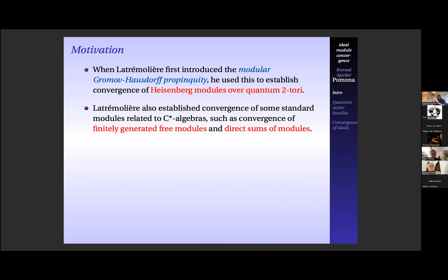When Latrémolière first introduced the modular propinquity, he used it to establish convergence of Heisenberg modules over the quantum torus. In that same paper, he also established convergence of some standard modules related to C*-algebras — finitely generated free modules and direct sums of modules. He showed that if you have convergence of the base C*-algebra, then any finitely generated modules under certain conditions converge as well in the modular propinquity. Also, if you have two modules and take the direct sum, and those converge in propinquity, then the direct sums of them converge too.